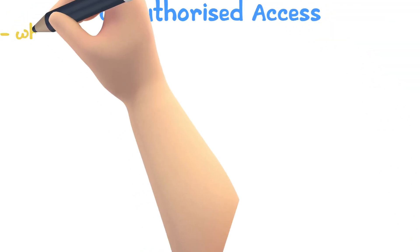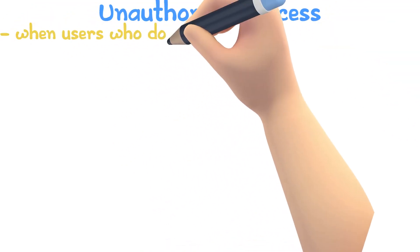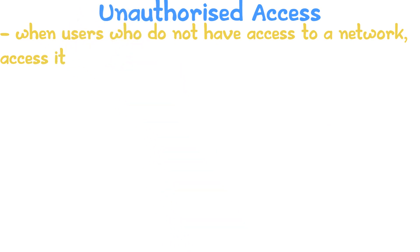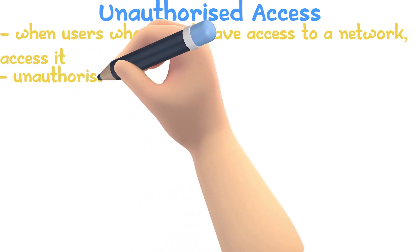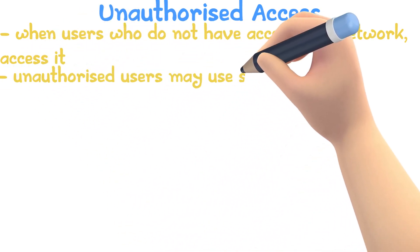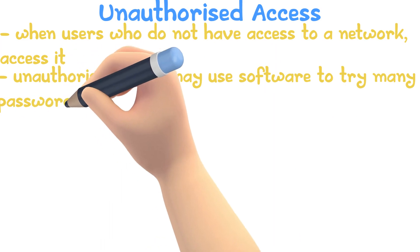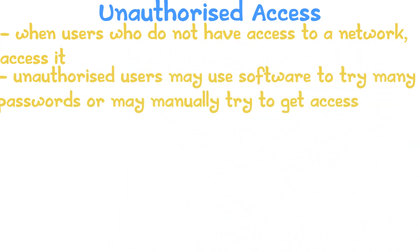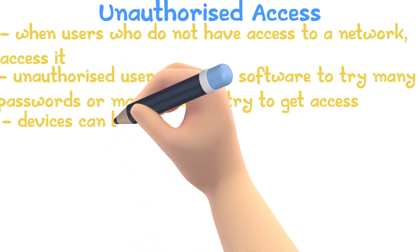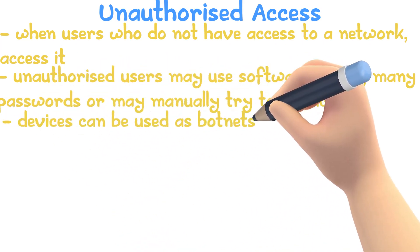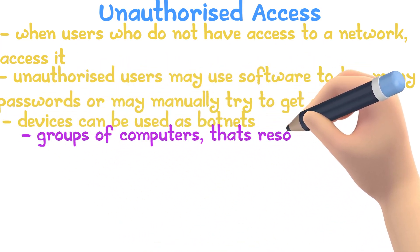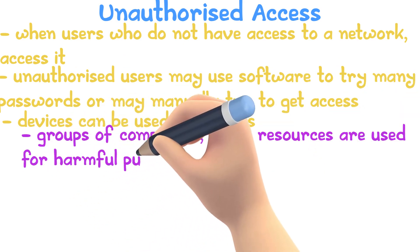Unauthorized access is when users who are not permitted to access a network access it. Unauthorized users could create software to try thousands of different passwords at once, or could manually try to get unauthorized access. Alternatively, devices in a network can be used as botnets. Botnets are a group of computers whose resources are used for harmful purposes.